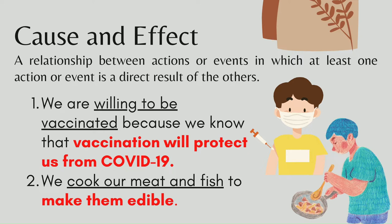Next, we cook our meat and fish to make them edible. The cause is that the meat and fish will be edible if people cook it, so the effect is that we cook our meat and fish. We are all familiar with cause and effect, but today we are specifically talking about cause — it is used to describe something that has a specific outcome as a result.